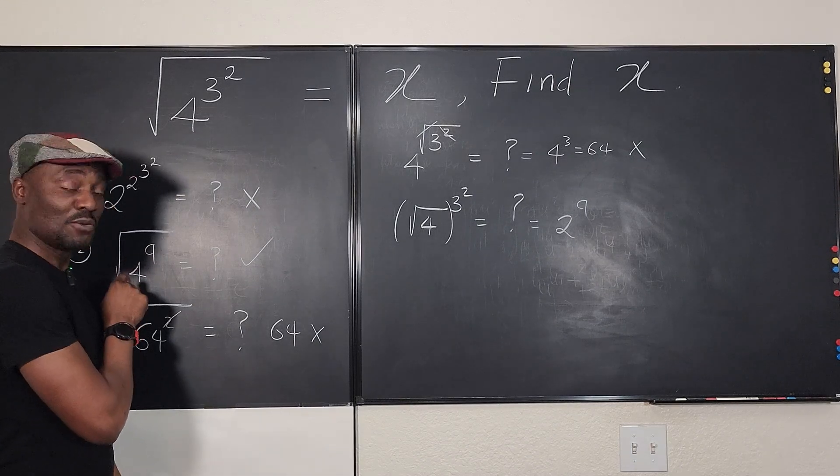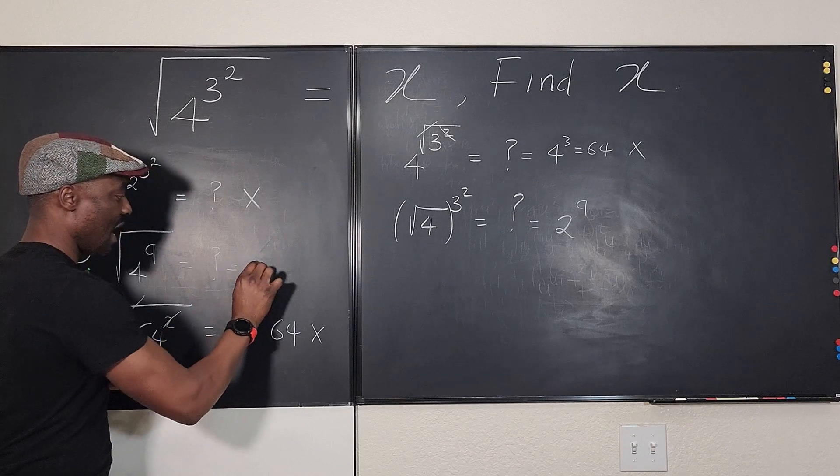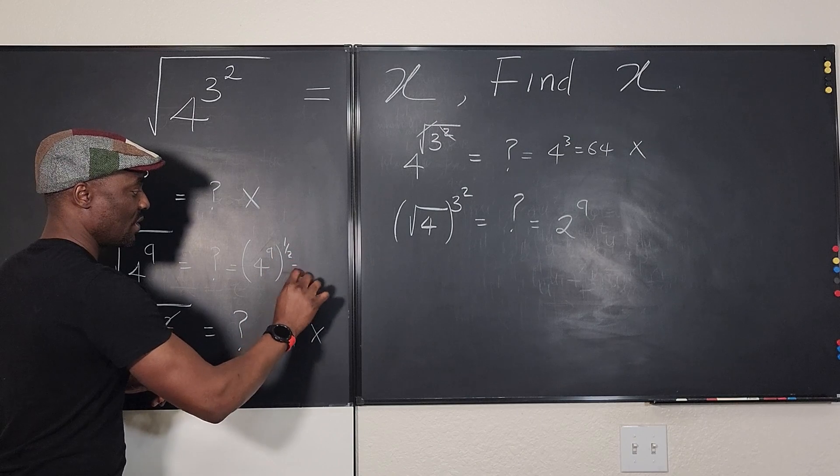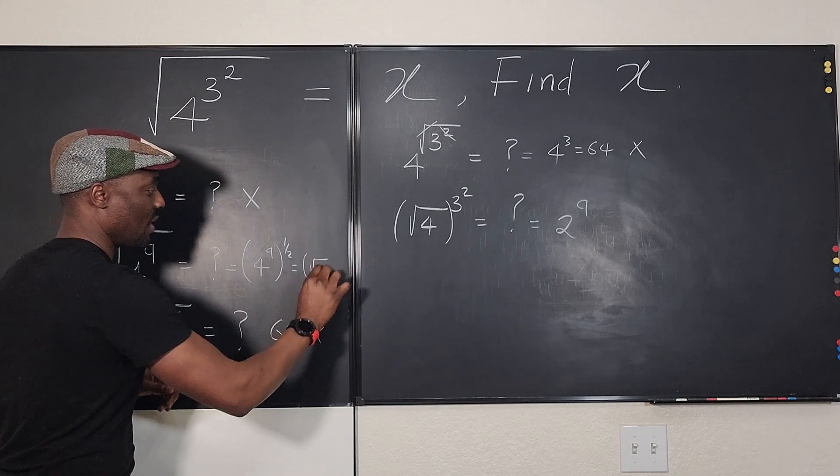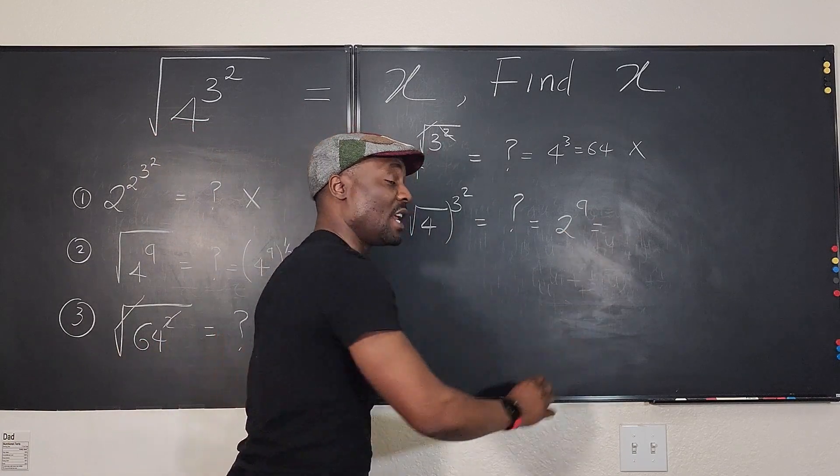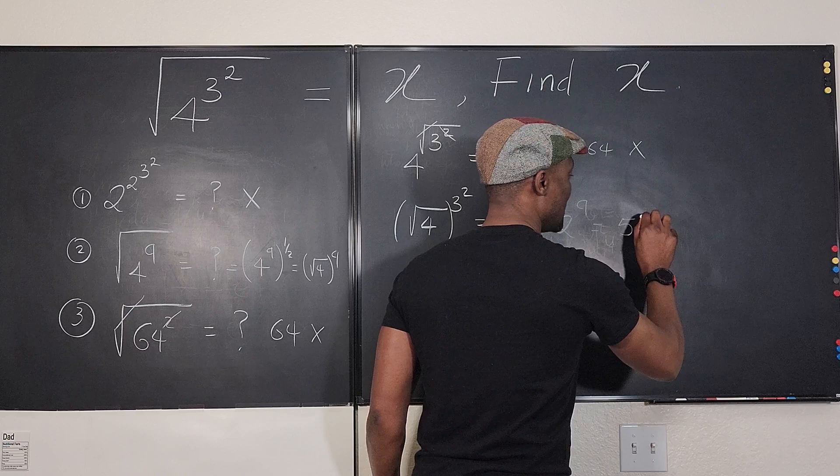This is the square root of 4 raised to power 9. Remember that this expression could have been written as 4 raised to power 9 raised to power 1 half, which is the same thing as the square root of 4 raised to power 9, which is what we have here. 2 raised to power 9, which is 2 times 2, 9 times, and you're going to get 512.